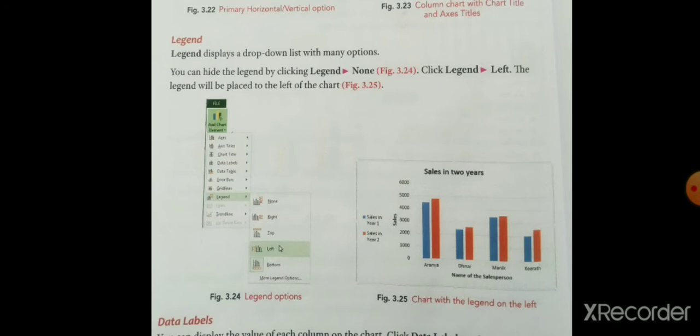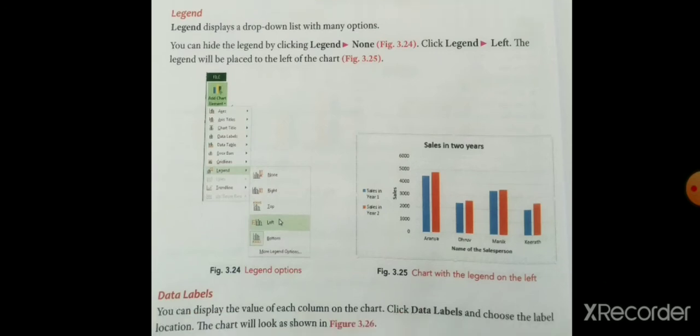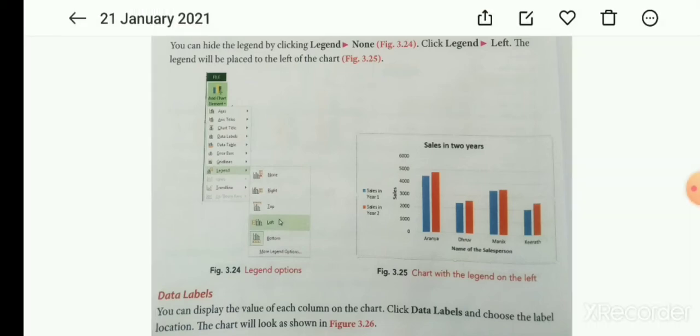You can display the value of each column on the chart. Click Data Label and choose the label location; the chart will look as shown in figure 3.26. आप जो column की value है वो chart में display करना चाहते हैं तो Data Label में जाके label का location choose करना पड़ेगा।